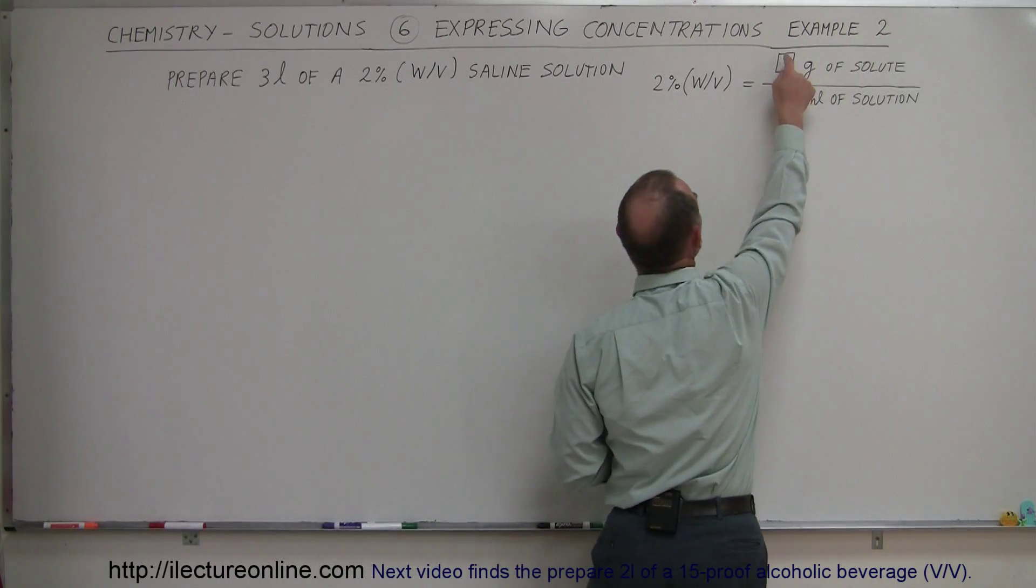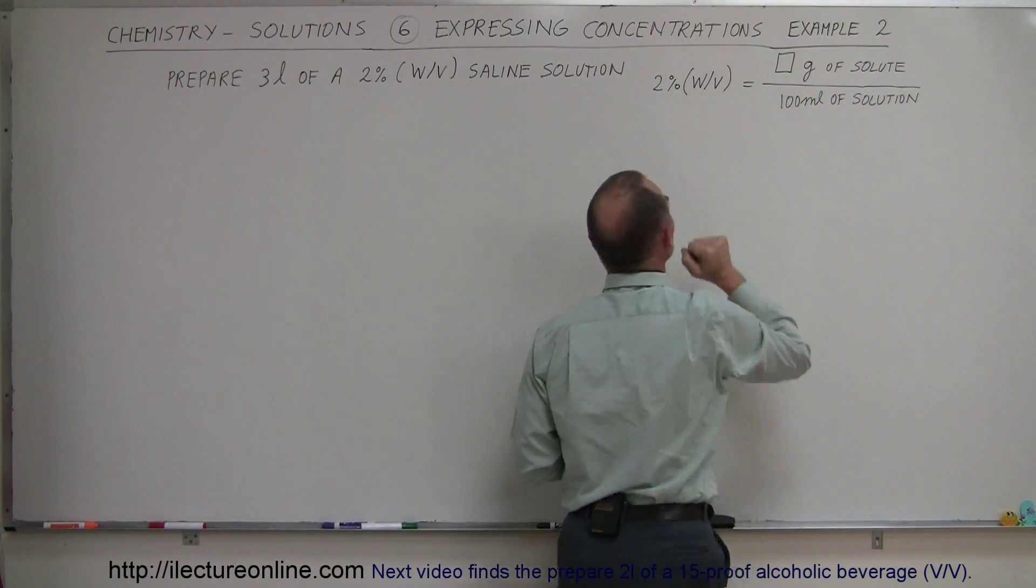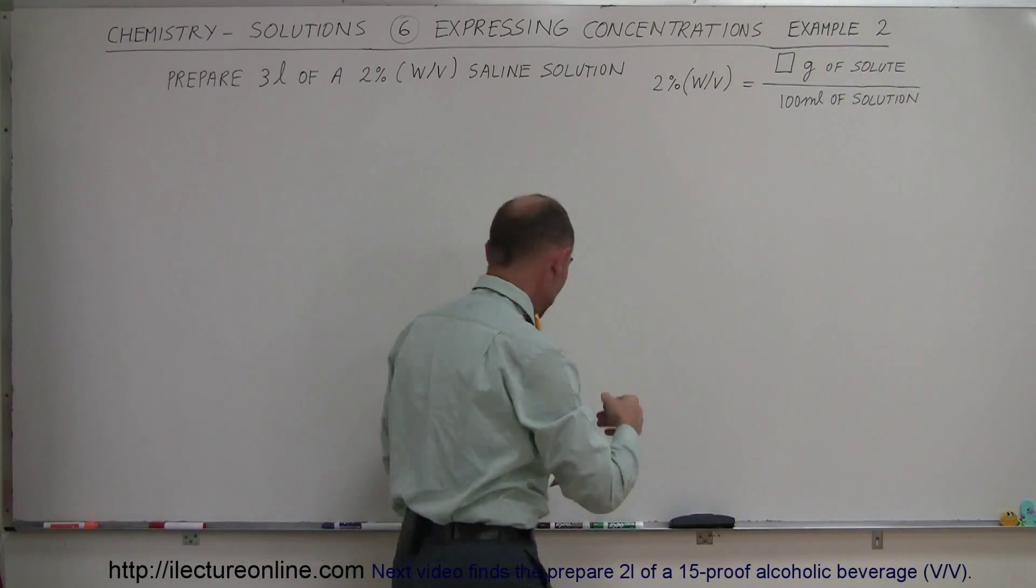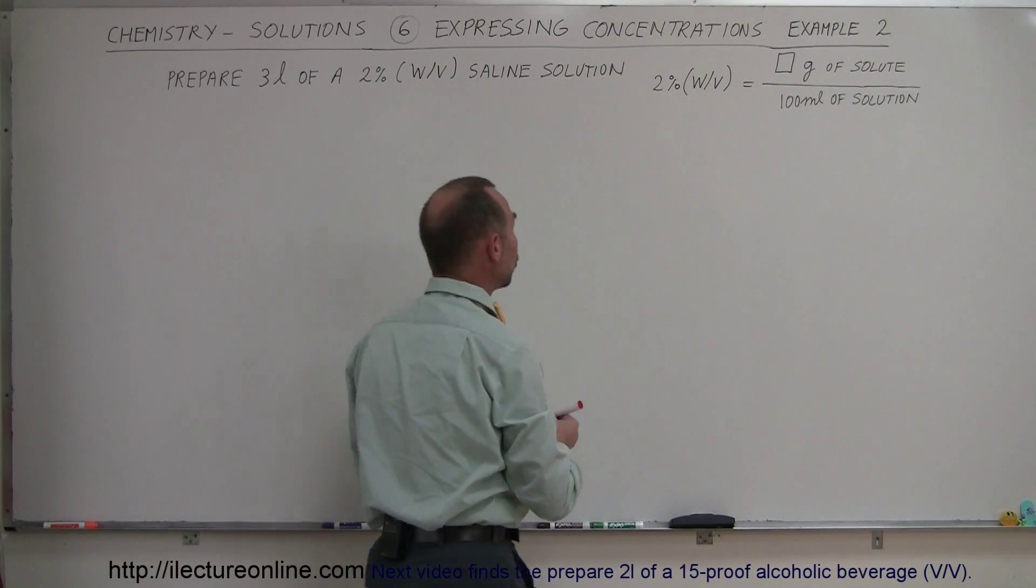So we're looking for that unknown quantity. How many grams to make 100 milliliters to get 2%? And of course 2 divided by 100 is 2% so we understand that the number up there would have to be a 2.